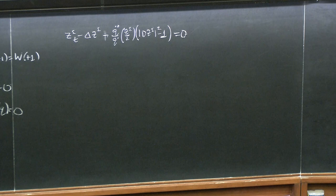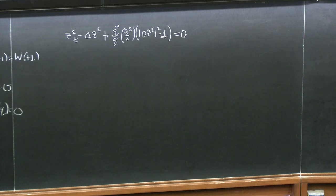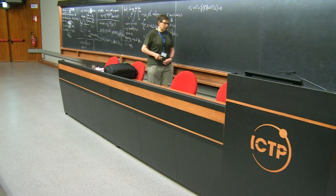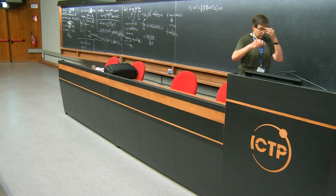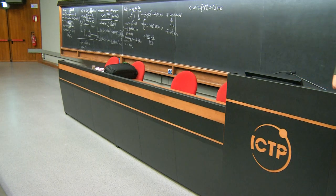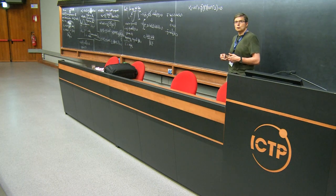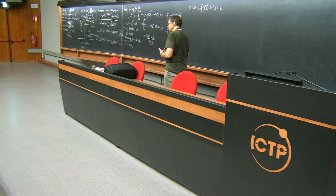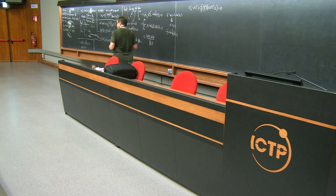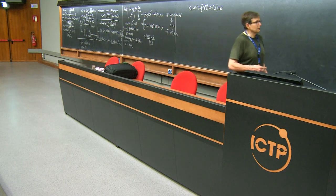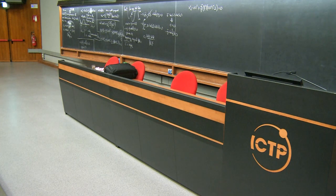And I'm left with the equation: Z epsilon_t minus Laplacian Z epsilon minus (Q double prime over Q prime) evaluated at Z epsilon over epsilon, times |DZ epsilon|² minus 1, equals zero. I claim that this problem is much easier to understand than the original. For students: this is a situation that happens often in PDE where if you start with a semilinear problem and want to get some estimates, it's occasionally better to make the problem nonlinear.